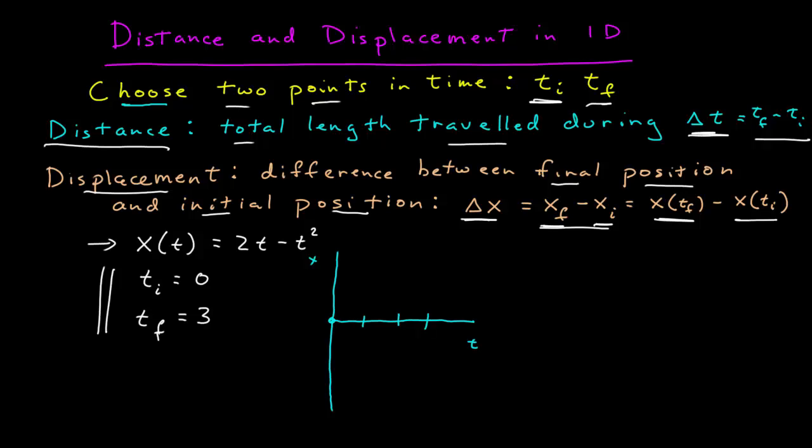T is equal to one, it goes up to one. T is equal to two, back to zero, so I'll call this one, zero. And t is equal to three, it looks like it goes down to one, two, minus three. And so I have this sort of parabola.